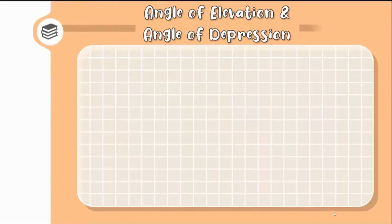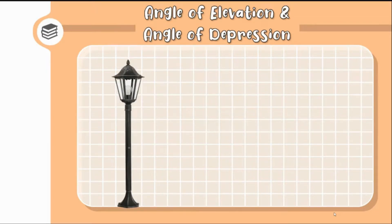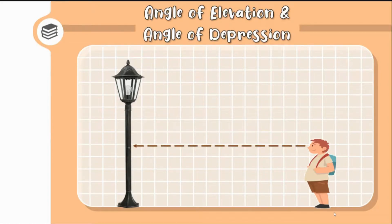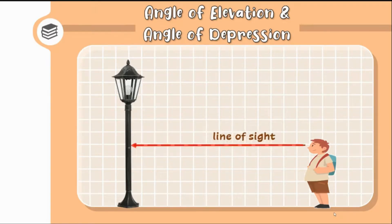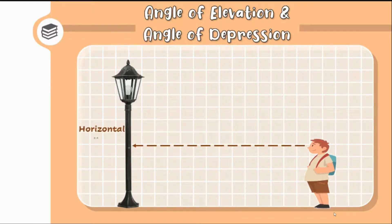Let us define first what is an angle of elevation and angle of depression. We have here a lamp post, mounted vertically with its base on the ground. A person is standing some distance away from this lamp post and looking straight at it. The line drawn from the eye of the person to the standpoint where the person is looking is called the line of sight. Since this line is parallel to the surface, we call it the horizontal line of sight, or simply the horizontal line.